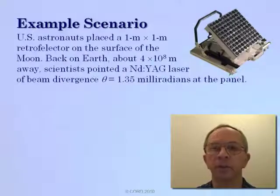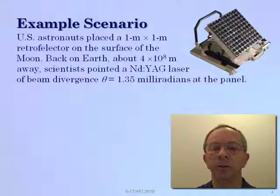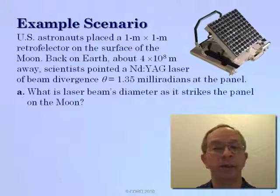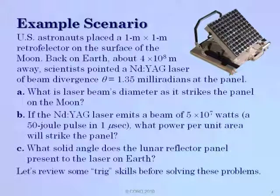For example, U.S. astronauts back in the early space program placed a one square meter retroreflector on the surface of the moon, designed to reflect back a large percentage of all light striking it from Earth, such as a laser beam. If scientists point a laser with a beam divergence of 1.35 milliradians at that panel, and the Earth is about 4 times 10 to the 8th meters away from the moon, what is the laser beam's diameter when it reaches the moon? And if the laser emits a 50 joule pulse in one microsecond — that's 5 times 10 to the 7th watts — what power per unit area will strike the panel?